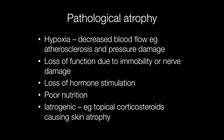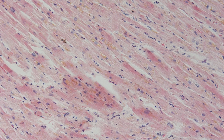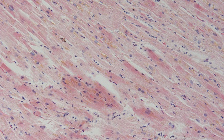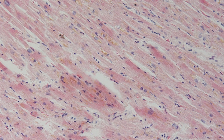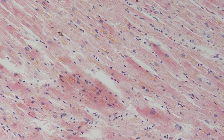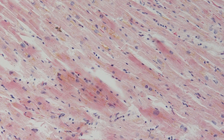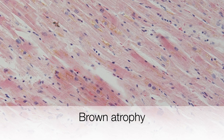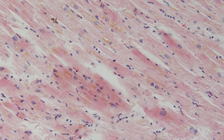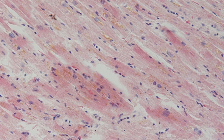Here are some examples of atrophy. This is a section of heart muscle from an elderly person and you can see that some of the heart muscle fibres are brown in colour — this is an example of brown atrophy. The brown pigment is lipofuscin and the atrophy is physiological as a result of old age.